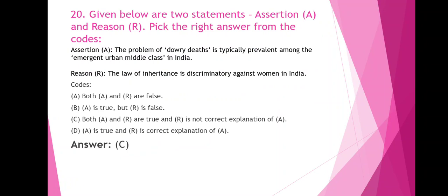Given below are two statements — Assertion and Reason. Assertion: The problem of dowry debts is typically prevalent among the emerging urban middle class in India. Reason: The law of inheritance is discriminatory against women in India. Option A: Both A and R are false. Option B: A is true but R is false. Option C: Both A and R are true and R is not the correct explanation of A. Option D: A is true and R is the correct explanation of A. The right answer is Option C — both A and R are true and R is not the correct explanation of A.